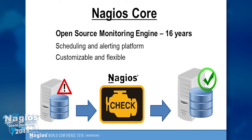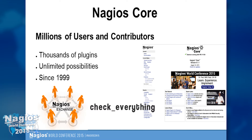So, Nagios Core is the open source monitoring and alerting engine, celebrating 16 years now — a lot of longevity. It's a scheduling and alerting platform. Core doesn't really know what a Windows machine or a website is, but using plugins, you tell Core what it is, what metrics to quantify, and when to alert. It's also very customizable and flexible — you can check almost anything, expand on it, use the existing resources on Exchange. There are millions of people using Core, and thousands contributing to the project, many of them here today.